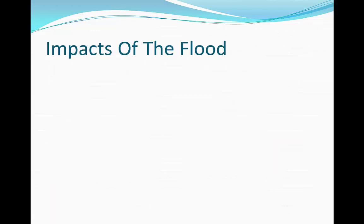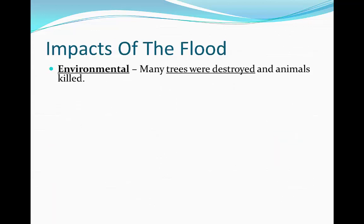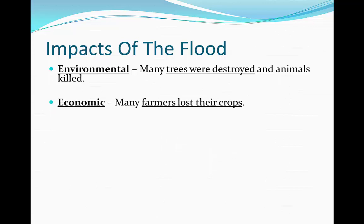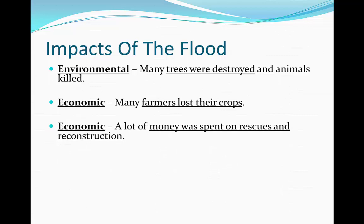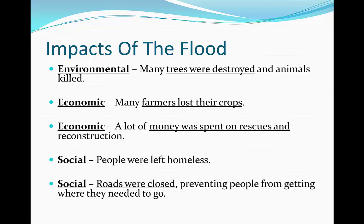Impacts of the Boscastle flood. An environmental impact is that many trees were destroyed and animals were killed in their habitats. An economic impact is that many farmers lost their crops. Also, a lot of money was spent on rescues and reconstruction of buildings damaged by the flood. People were left homeless as the flood destroyed many homes, and many roads were closed, which prevented people from getting where they needed to go.